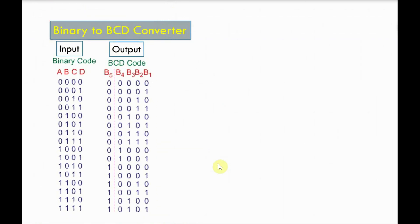Next step, we have to find the logic equation or logic expression for all the output variables. So, we have b5, b4, b3, b2 and b1. We have to find the logic equation of all these variables with respect to the input variables.